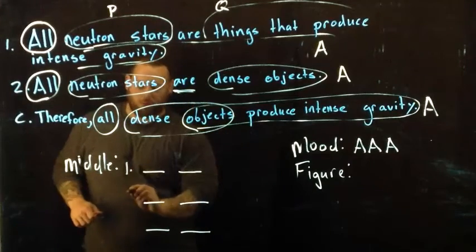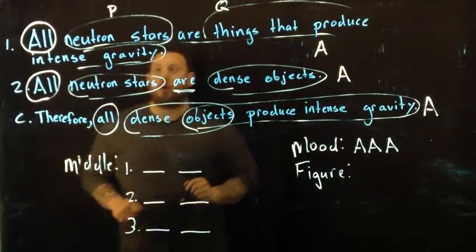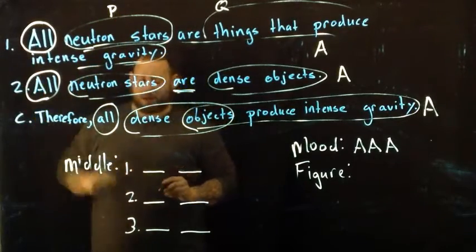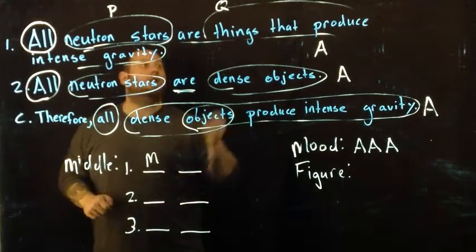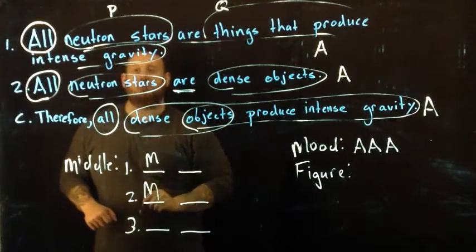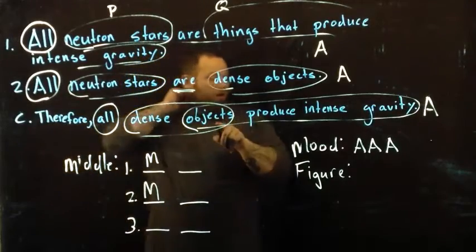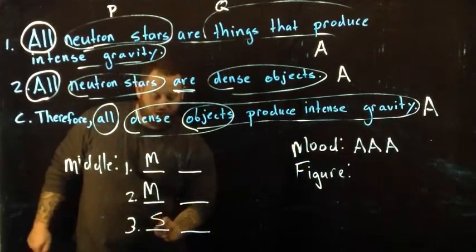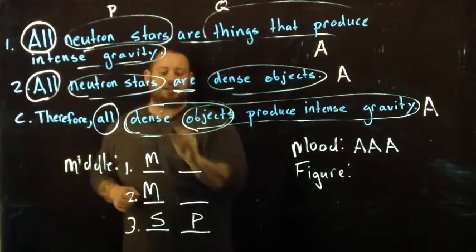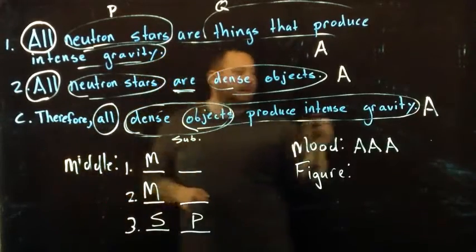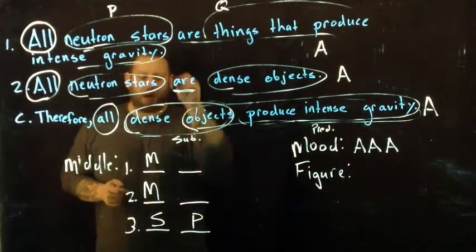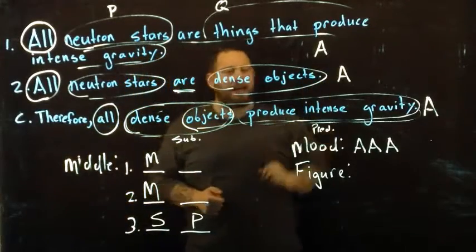Our middle term comes as the first term in the first premise, so we place M there. In the second premise, the middle term 'neutron star' also comes in the first position. Our conclusion always has two things: a subject and a predicate. The subject is what comes first — in this case, 'dense objects.' The predicate is 'things that produce intense gravity.' Your conclusion will always have the subject first and the predicate second.